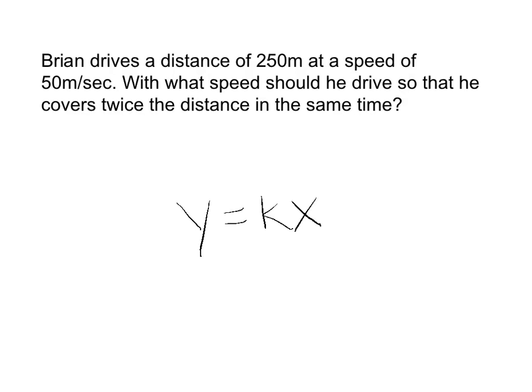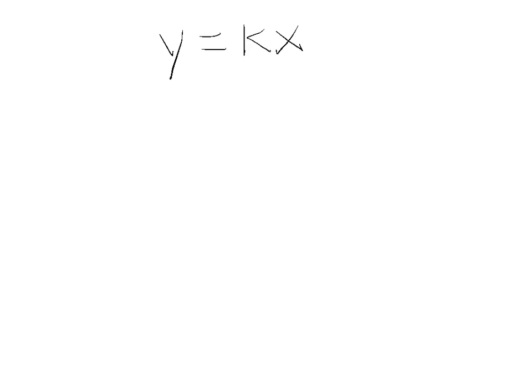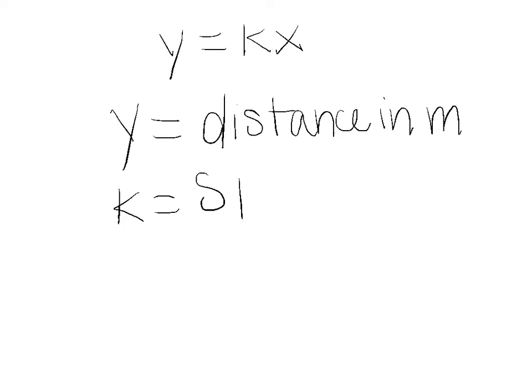Now, let's assign what each variable is. Let's assume that y equals the distance in meters. k is the speed given in meters per second, and x equals the time in seconds.